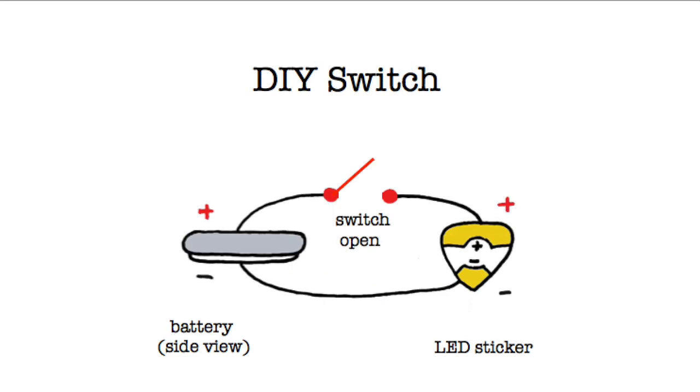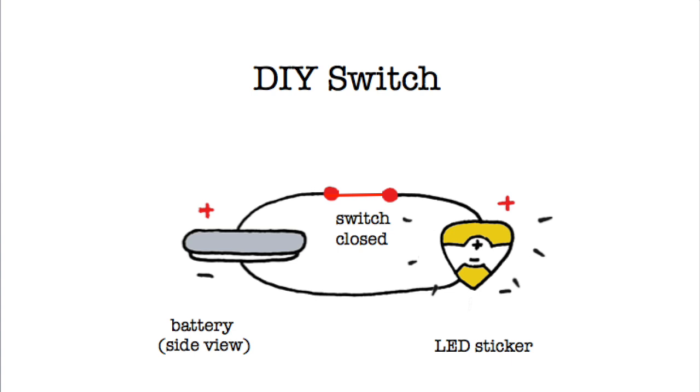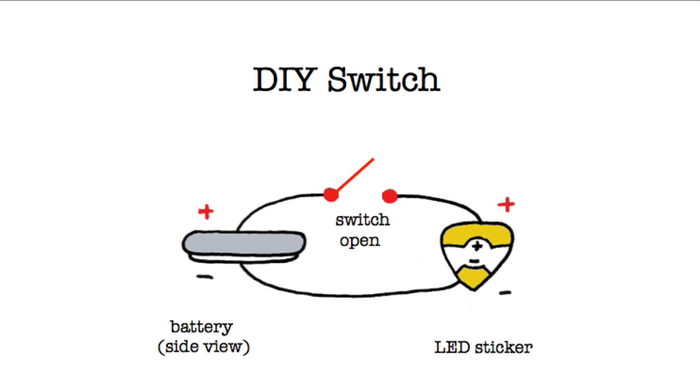In a switch, we bridge the gap in your circuit with metal foil, which fully connects or disconnects your light from the battery, causing it to turn either on or off.